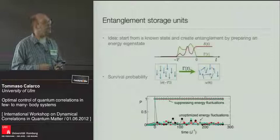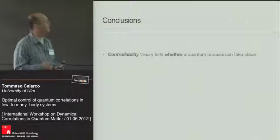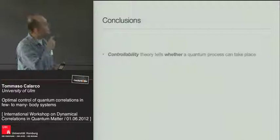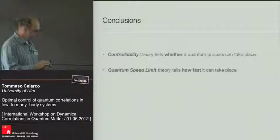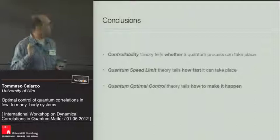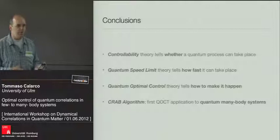To conclude: if I wonder whether a certain process can take place, I can use controllability theory — look at my dynamical algebra and I will know. If I want to know how quickly this can happen, I look at the quantum speed limit, which can be very relevant for experiments. If I want to know how to actually do it, I need to use modulations via quantum optimal control. And very proudly, I have presented the first instance of a quantum optimization algorithm — the CRAB algorithm — that can deal with quantum many-body systems and quantum phase transitions. Thank you.